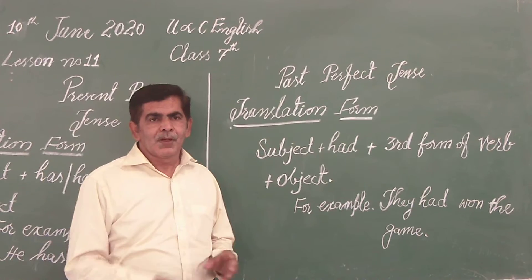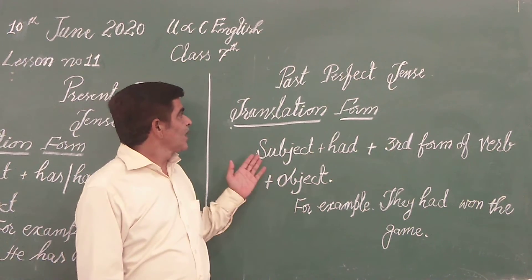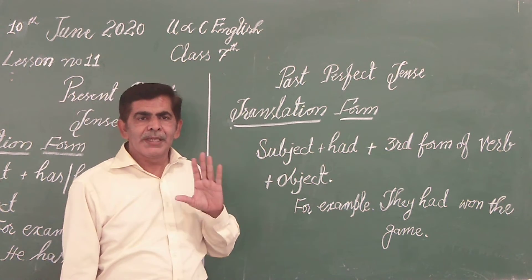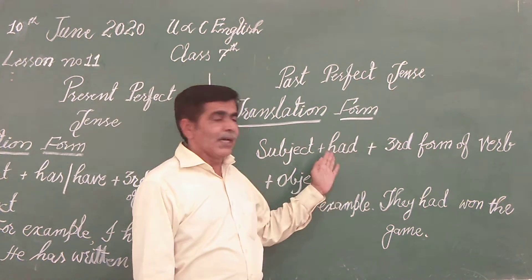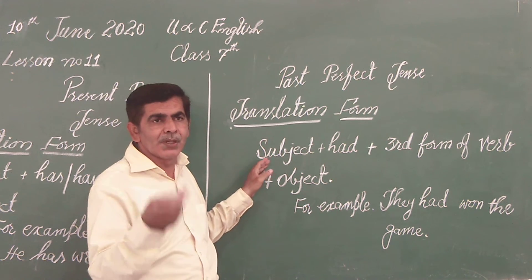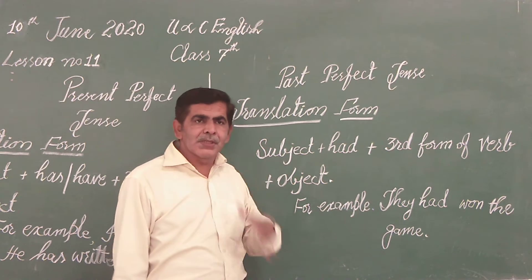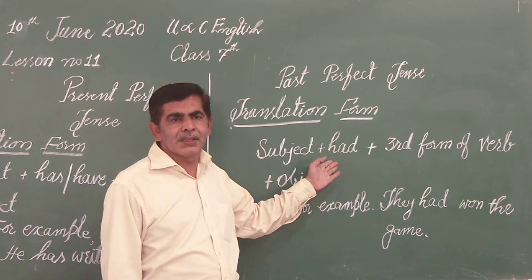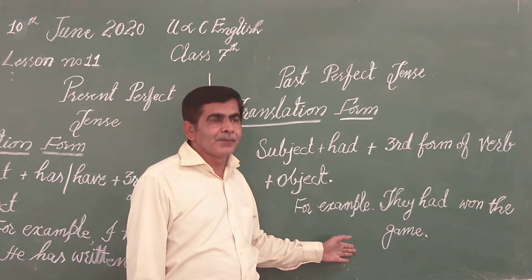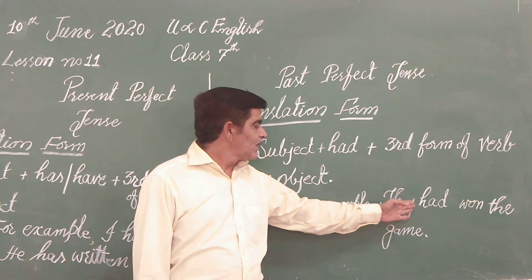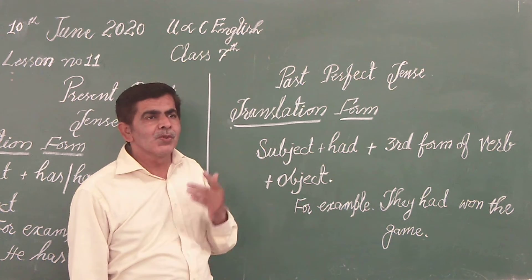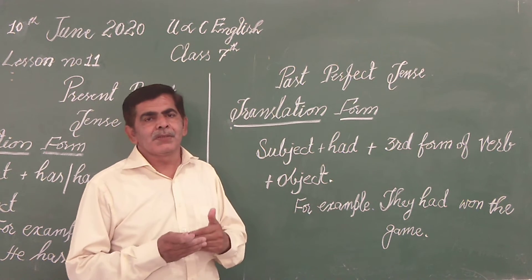For example: 'He has written a story.' In the past perfect tense, we use 'had' instead of has or have. The third form of the verb is still used. In the present and past perfect tenses, we change the helping verb but keep the third form of the main verb.